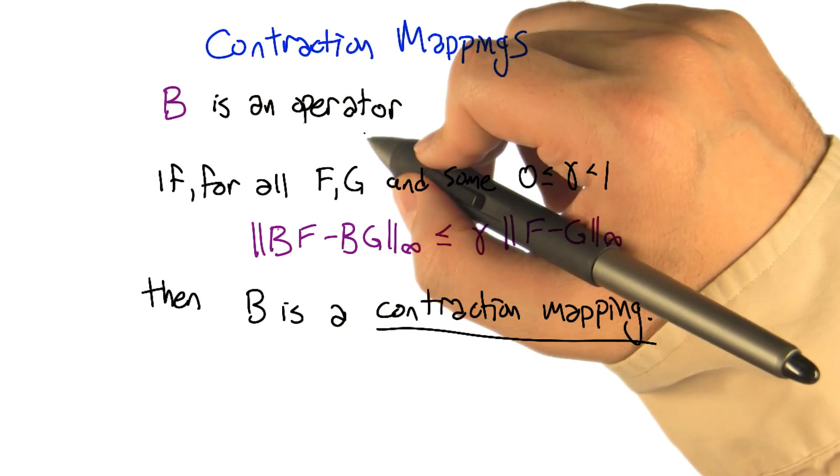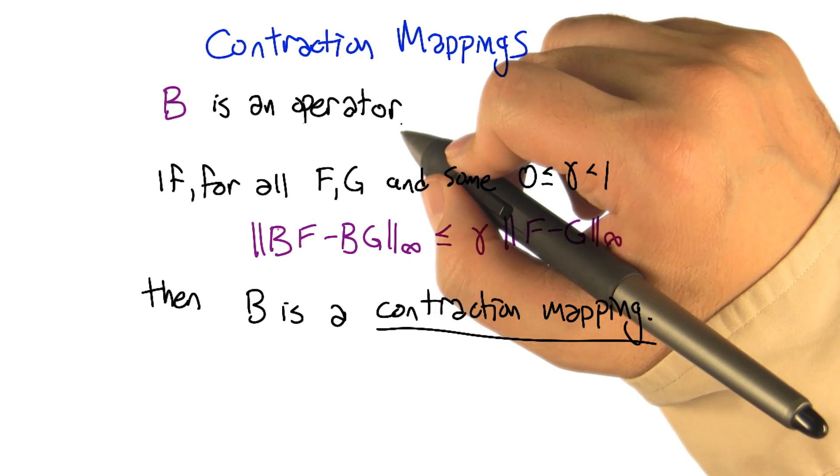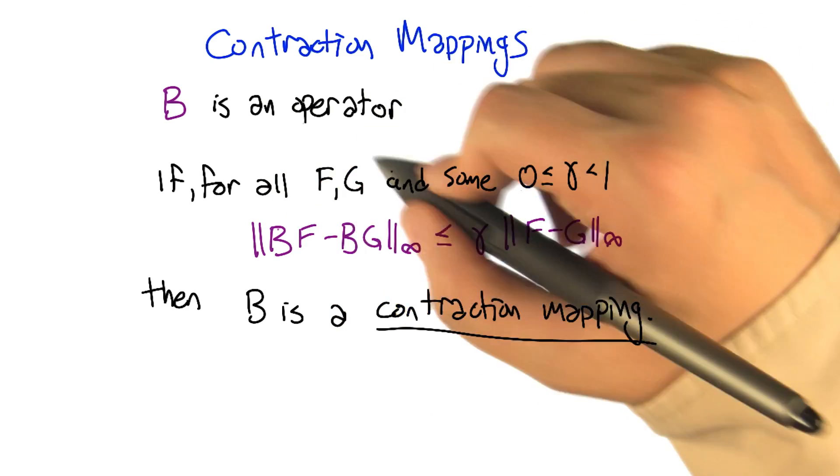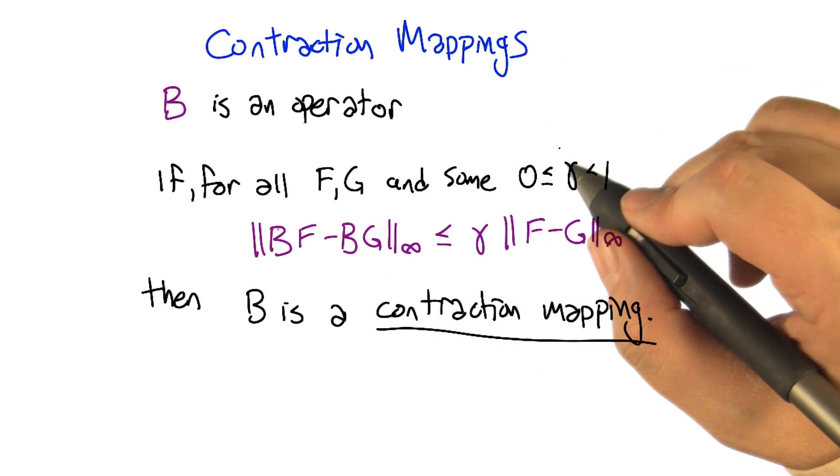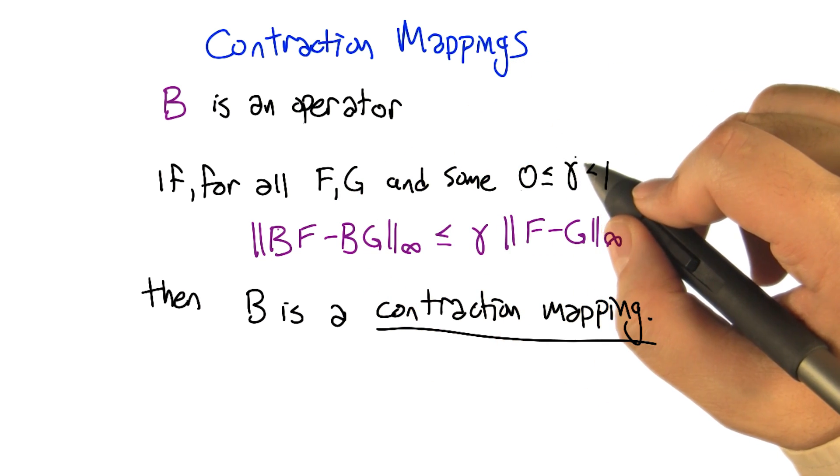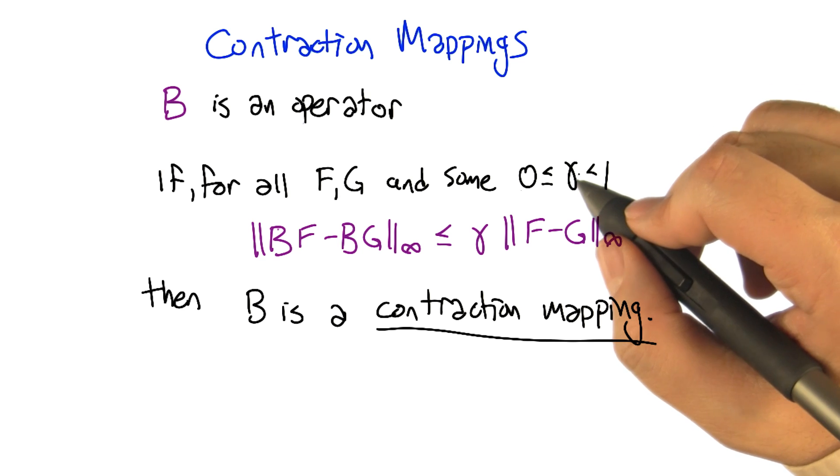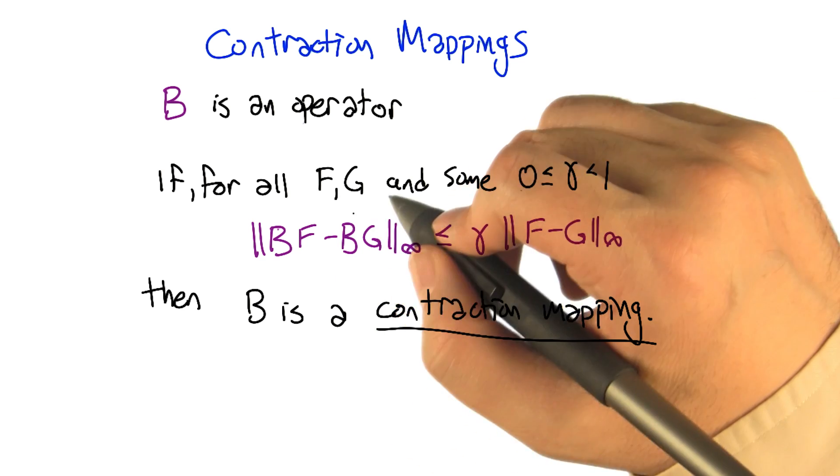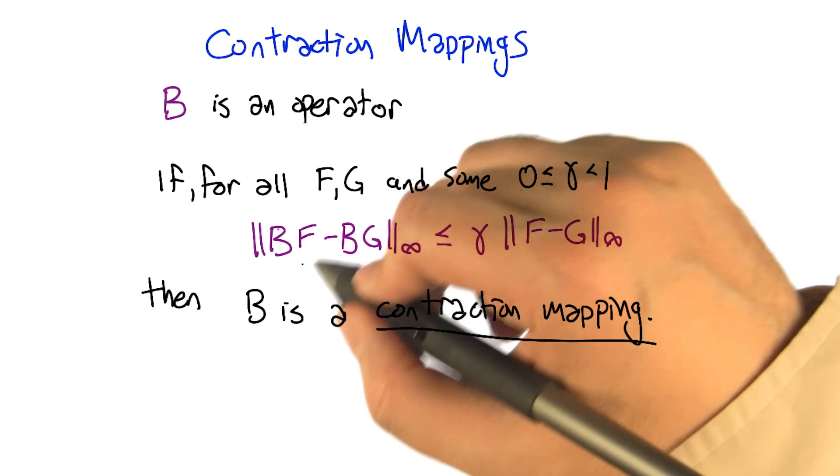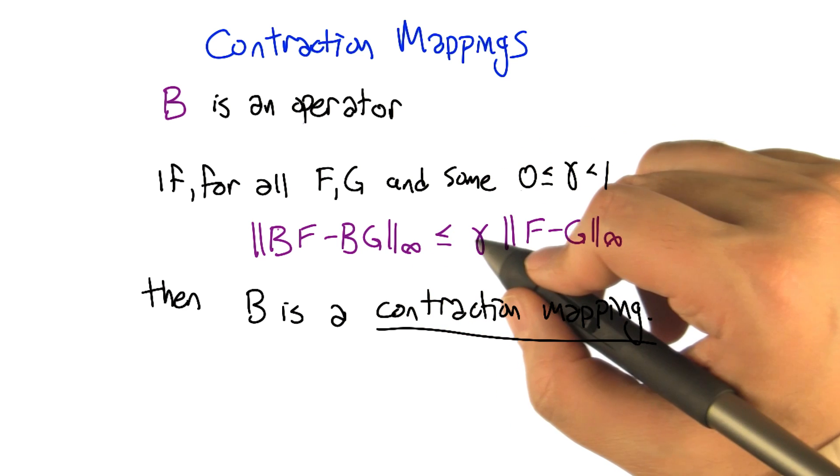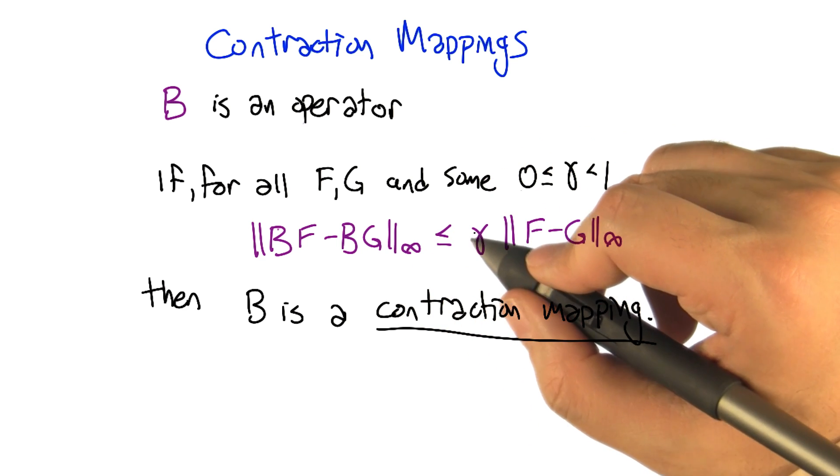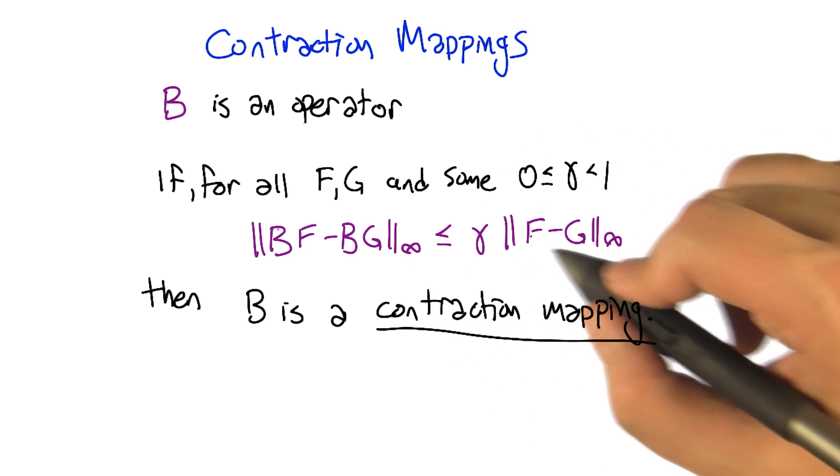So B is some operator and it's mapping value functions to value functions. If it's the case that for all value functions, so all value functions F and G, and some multiplicative factor gamma which is less than one, if it's the case that the distance between B applied to F and B applied to G has to be smaller than or equal to gamma times the original distance between F and G.